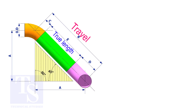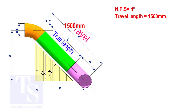Assume that the elbows are short radius. Nominal pipe size is 4 inch. The travel length is 1500 millimeters. The joint gap is 3 millimeters. Calculate the true length of the spool.